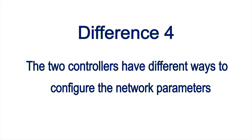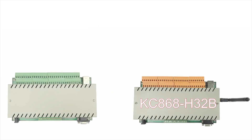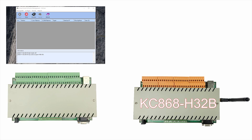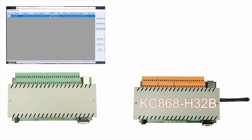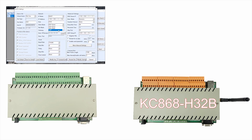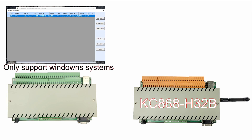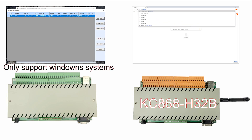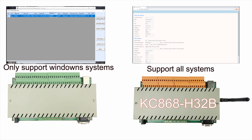Difference 4: the two controllers have different ways to configure the network parameters. The H32L needs PC software to configure the IP and port, and the software only supports Windows systems. The H32B can be configured via web pages and supports all systems.